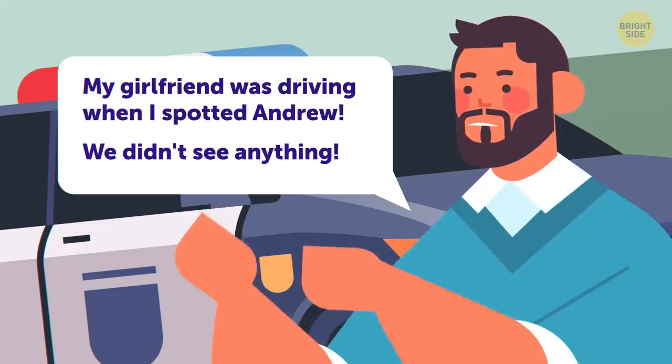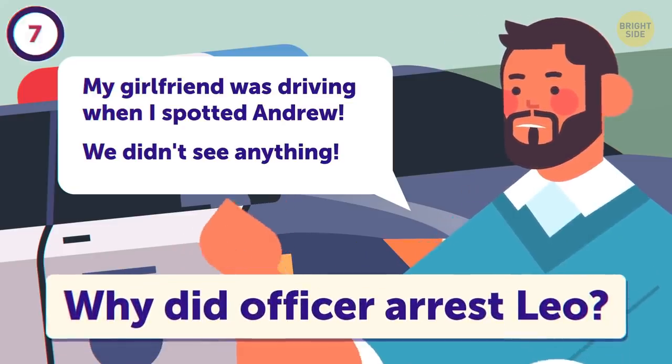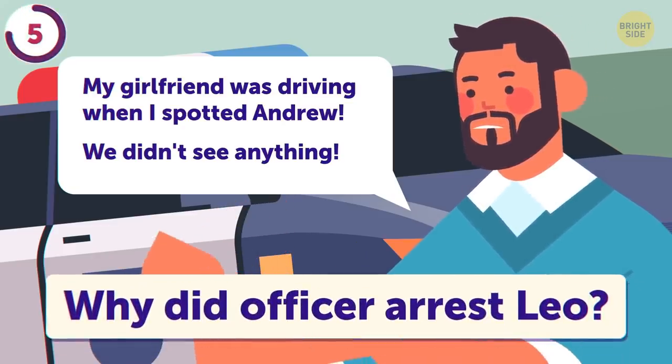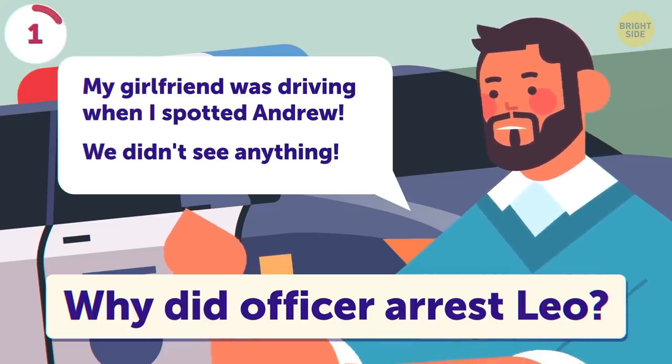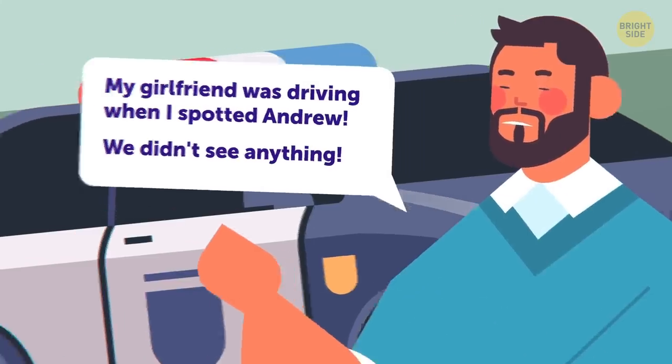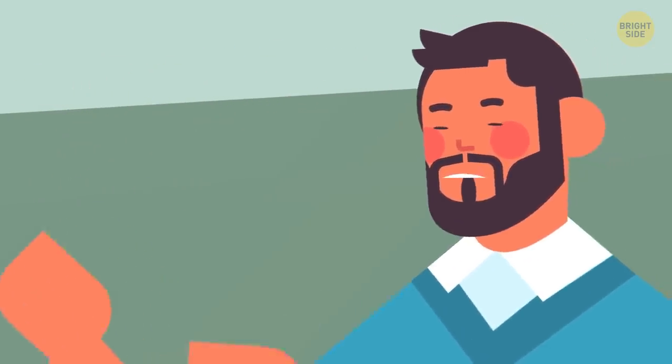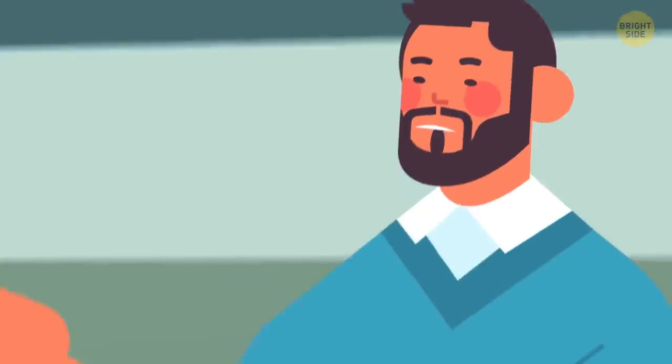The police officer arrested Leo. Why? With such poor eyesight and without glasses, how could he notice Andrew lying in the bushes?